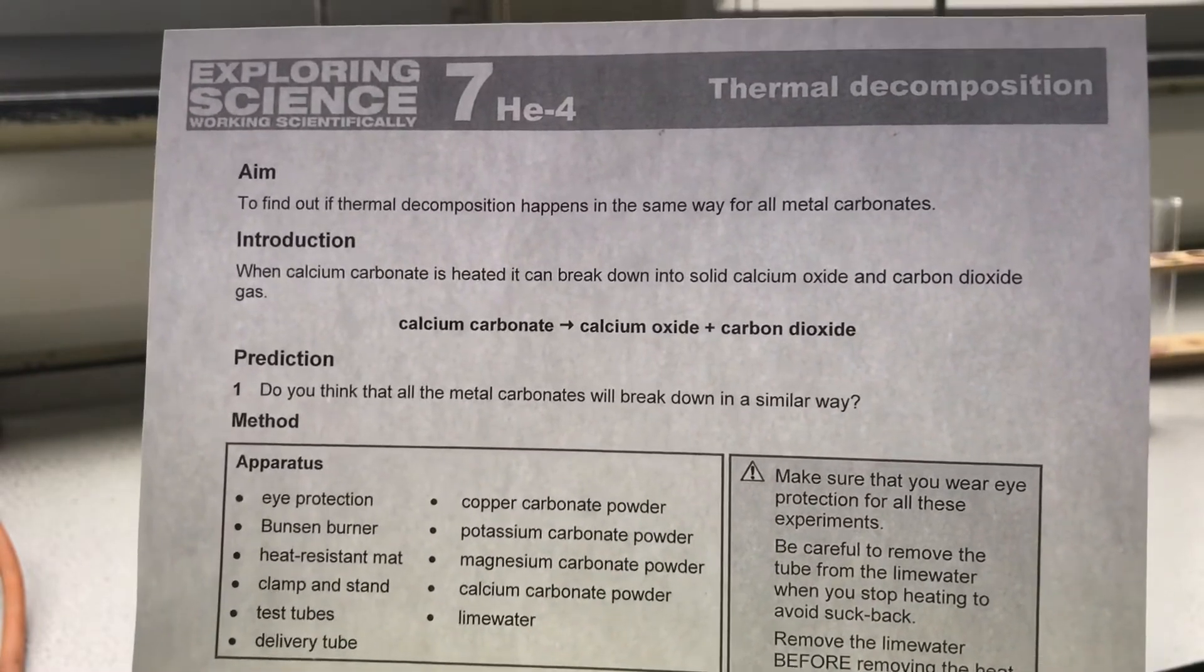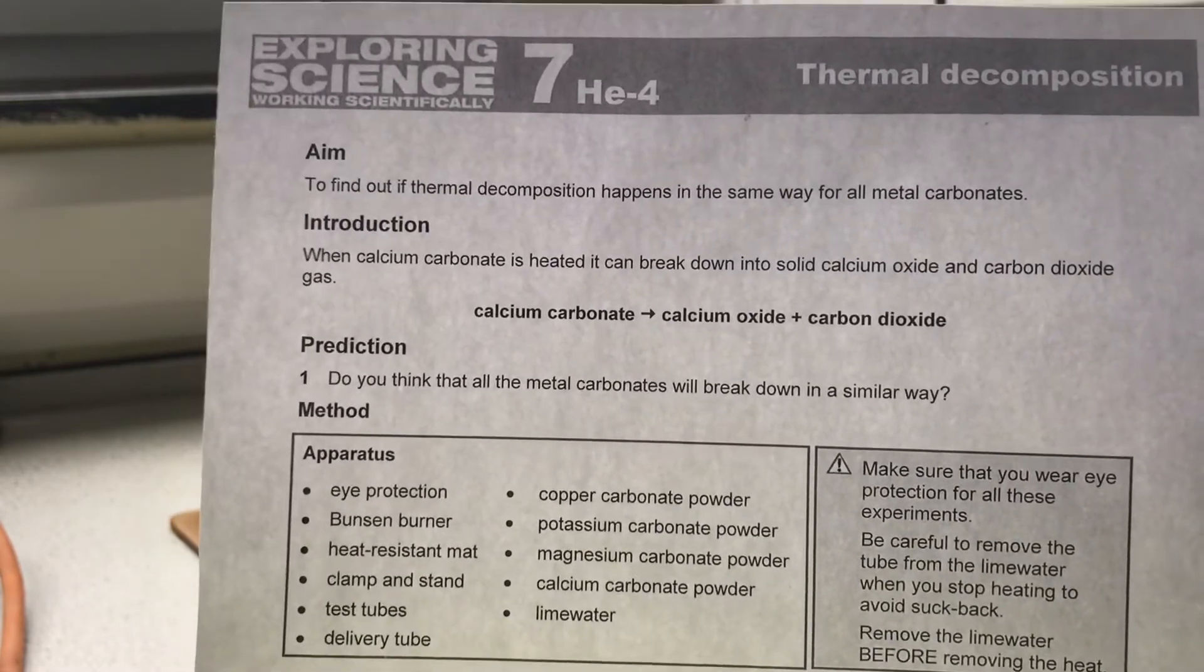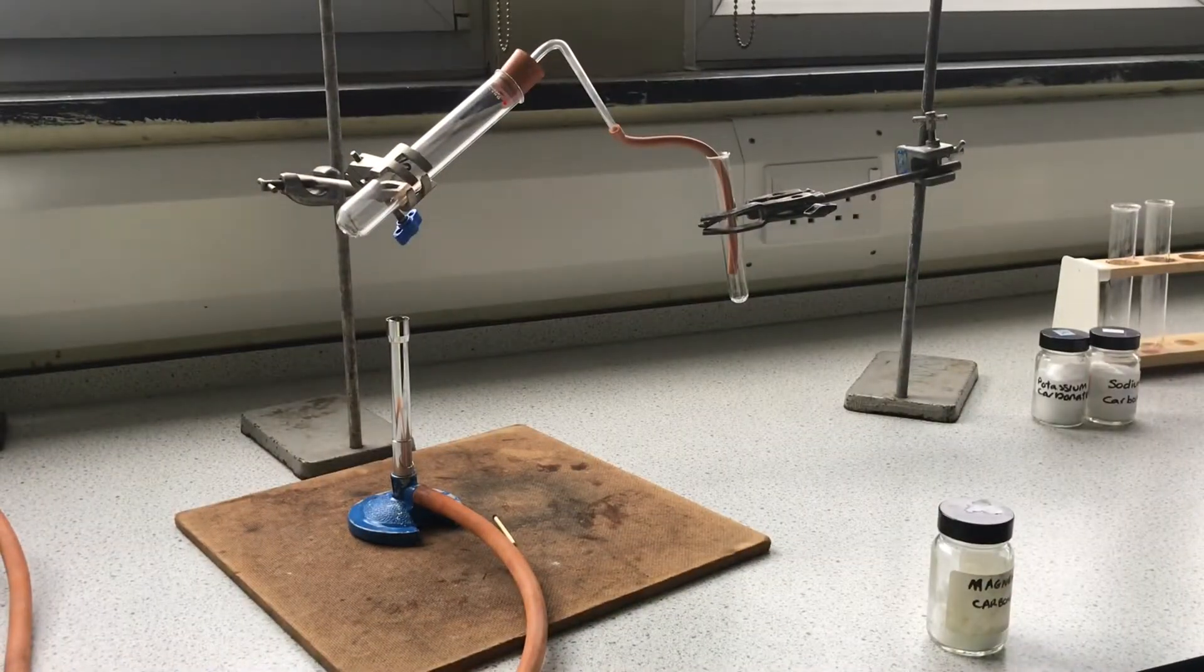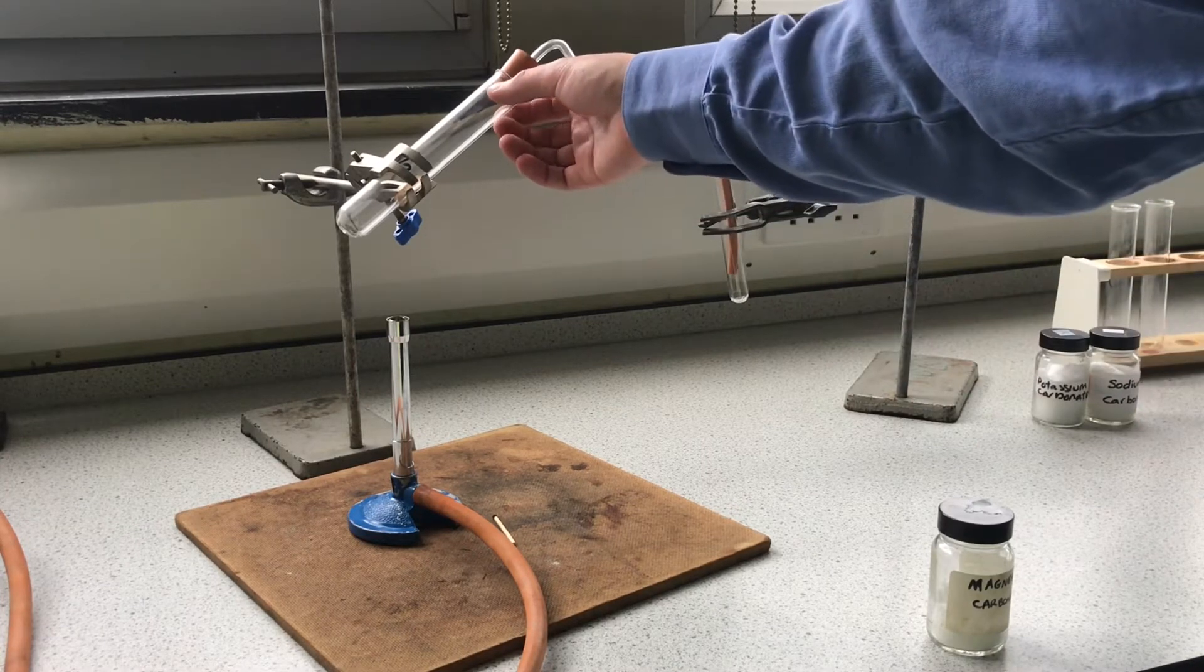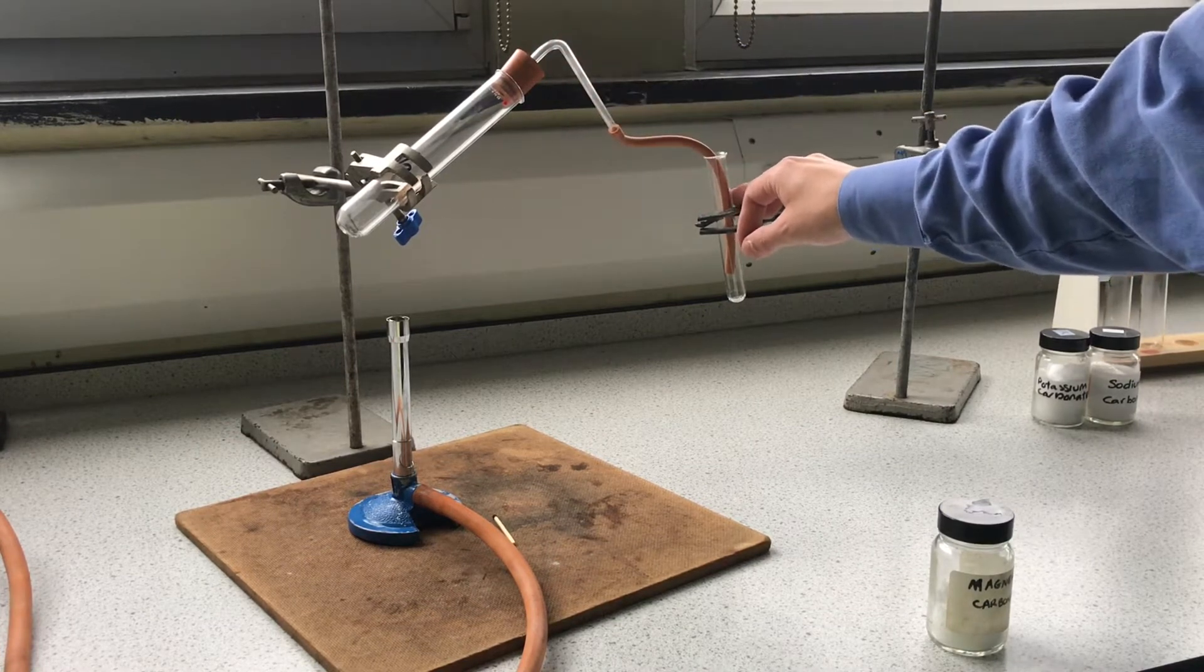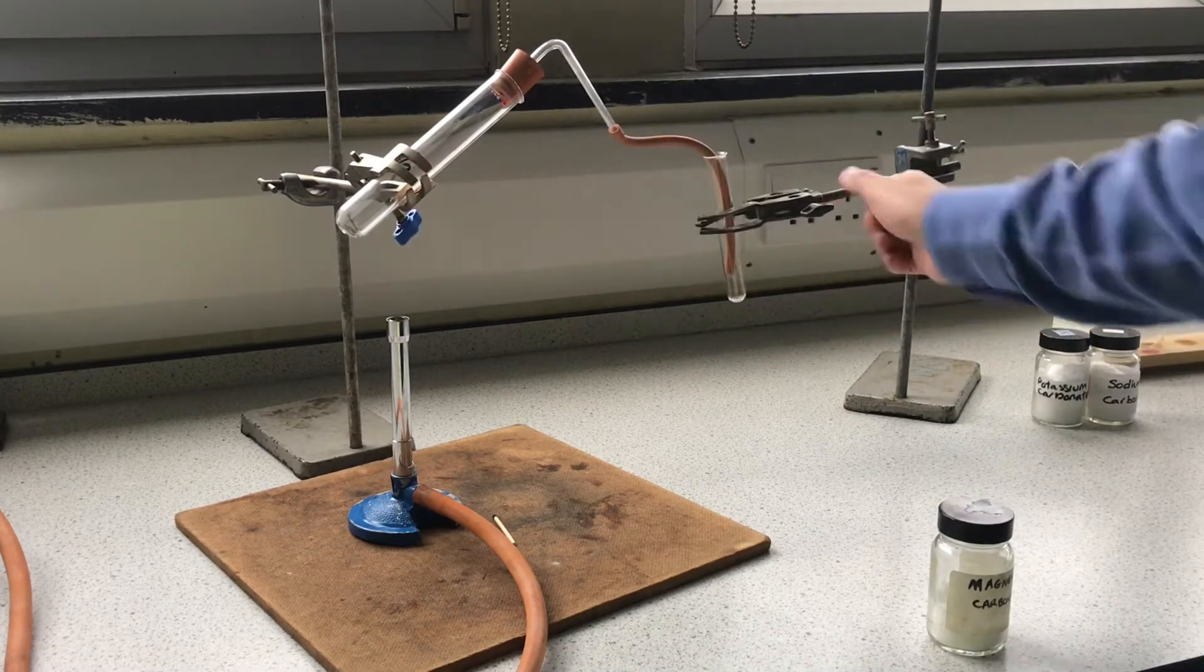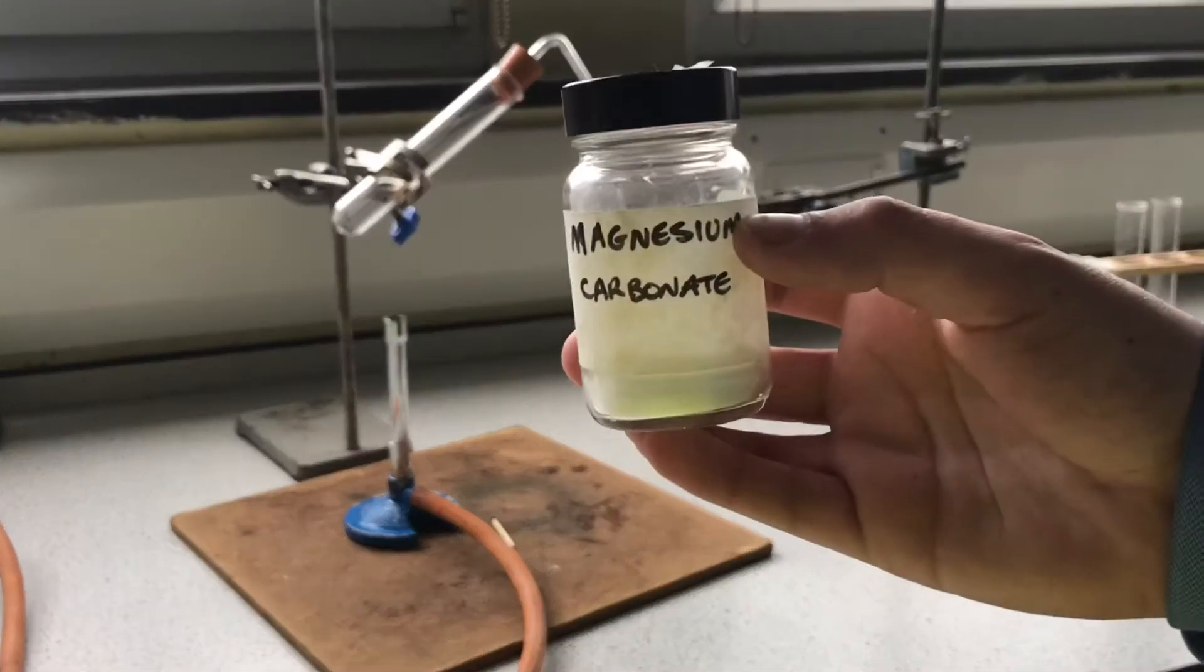Today we'll be investigating the thermal decomposition of metal carbonates. To begin we need to set up our apparatus. As you can see here we have a boiling tube with a rubber bung that has a delivery tube connecting it to a test tube, all of this is held up by clamps.